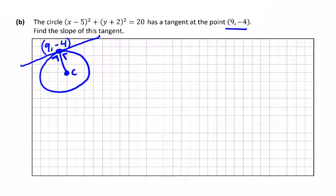Then we can get the slope of that line, and then the perpendicular slope to get the slope of the tangent. This should be easy. The center based on the equation is going to be, change the sign, 5 minus 2. We don't need r.